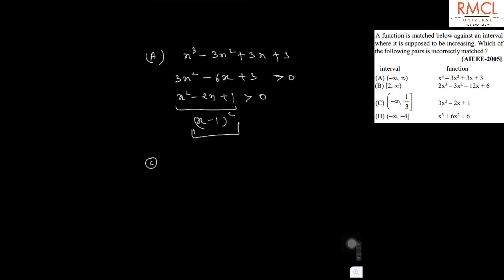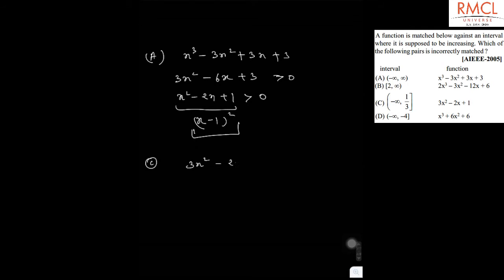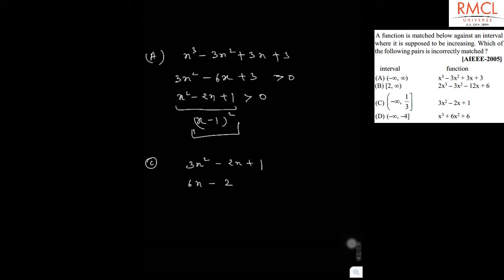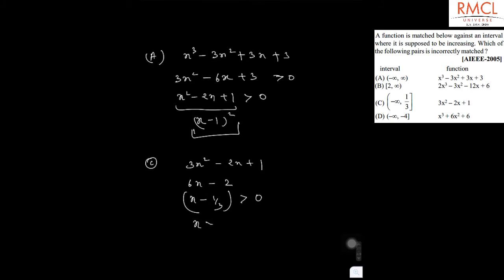In option C, we have the function 3x² - 2x + 1. Its differentiation is 6x - 2, or x - 1/3, which should be greater than 0. So x should be greater than 1/3 for the increasing function. Therefore, option C is incorrectly matched. Option C is the answer.